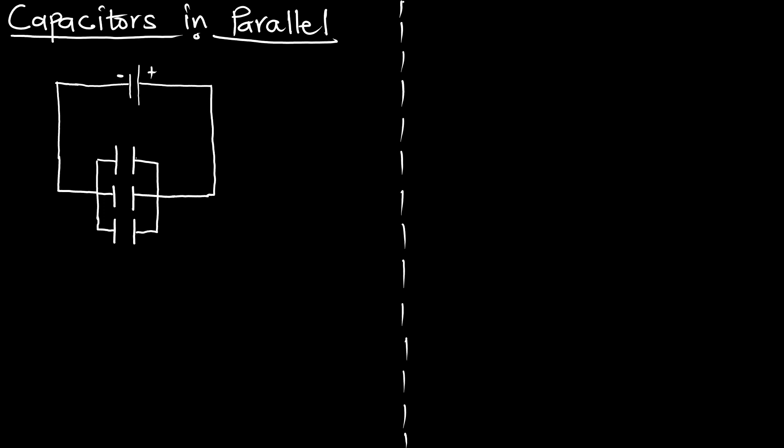Hello, welcome to Einstein's Mechanics. In this episode we are going to talk about capacitors in parallel arrangement — how to charge capacitors or how to arrange them in a circuit when we are interested in the parallel arrangement. This is a diagram of our circuit. We have a voltage source which has positive and negative terminals, and we know the symbol for a capacitor, which is quite different from the voltage source symbol.